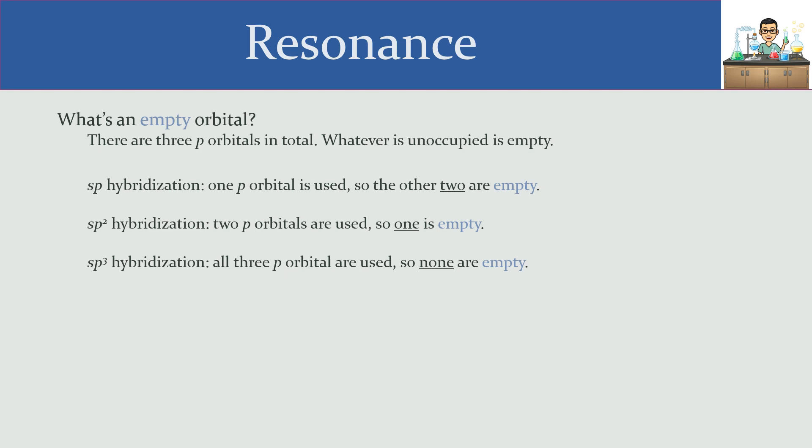With sp2 hybridization, we're using up two p orbitals. So that means that one out of the three is empty. So resonance is a possibility there too.